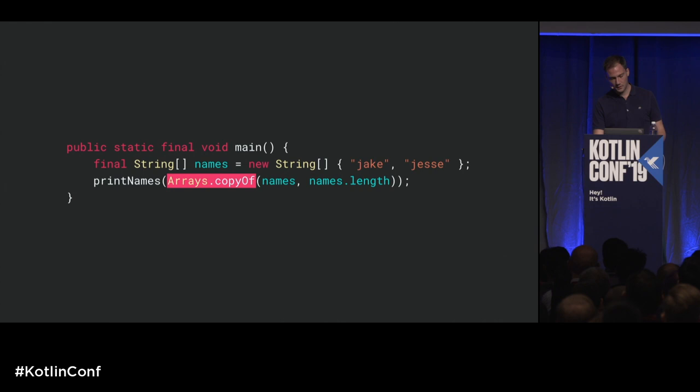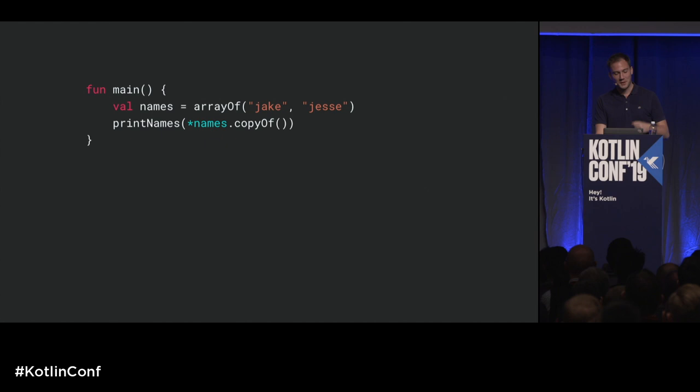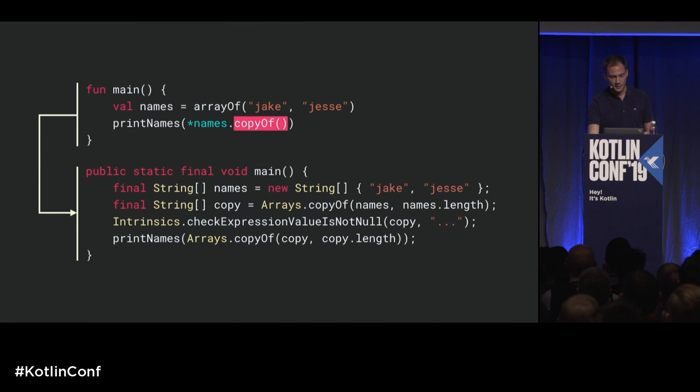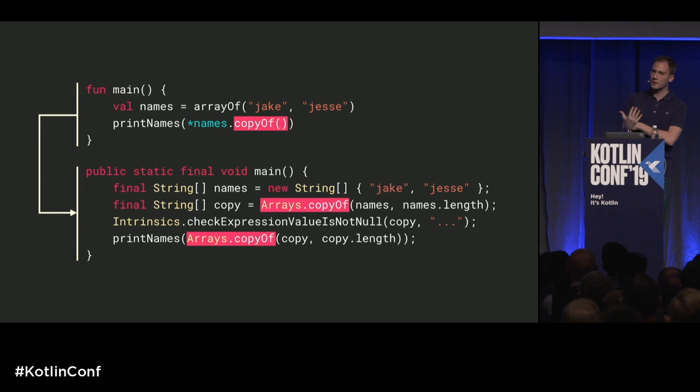What if we try to be smart and do the copyOf ourselves? Here I have my array of names, I call the spread operator, but I do the copyOf myself. Looking at the generated code, not only do we still have the copyOf generated by the compiler, we also have a non-null check, because Kotlin doesn't know that when you copy a non-null array you get a non-null array. So instead of having one copy, we have two copies — three array allocations just to call this function.